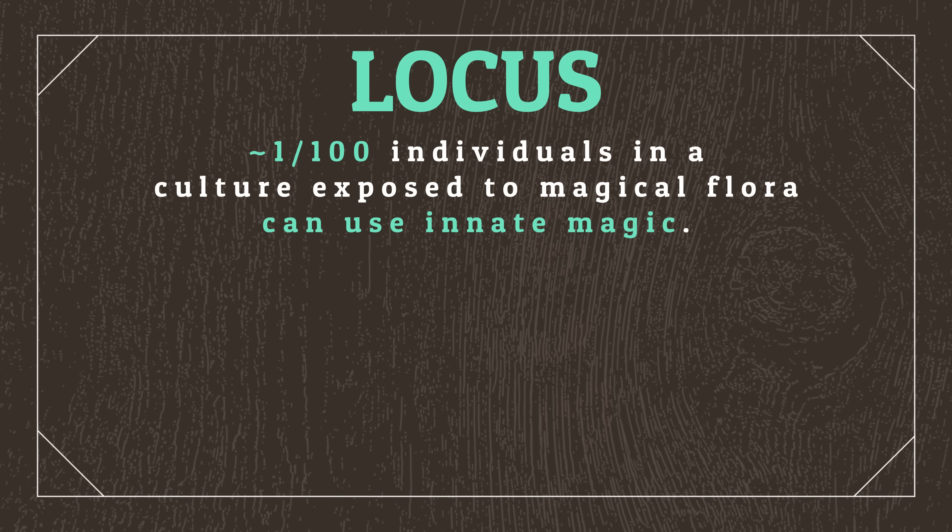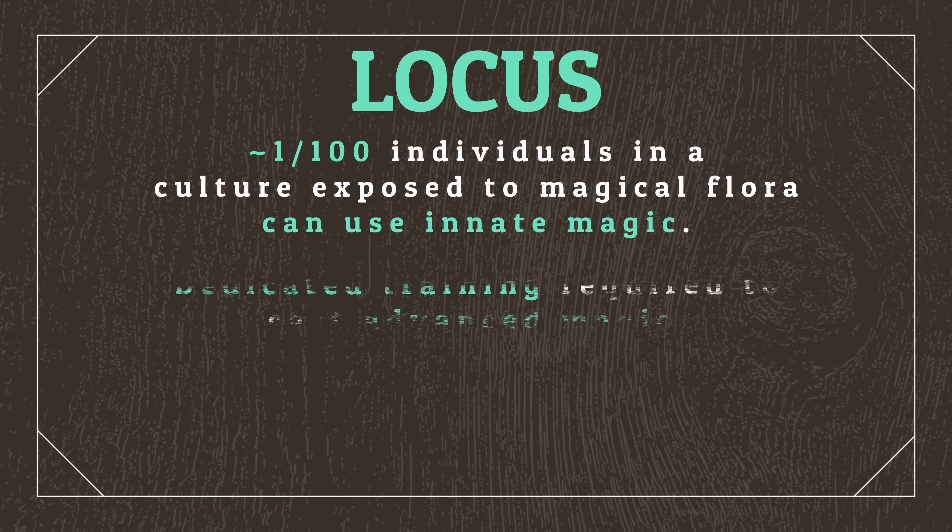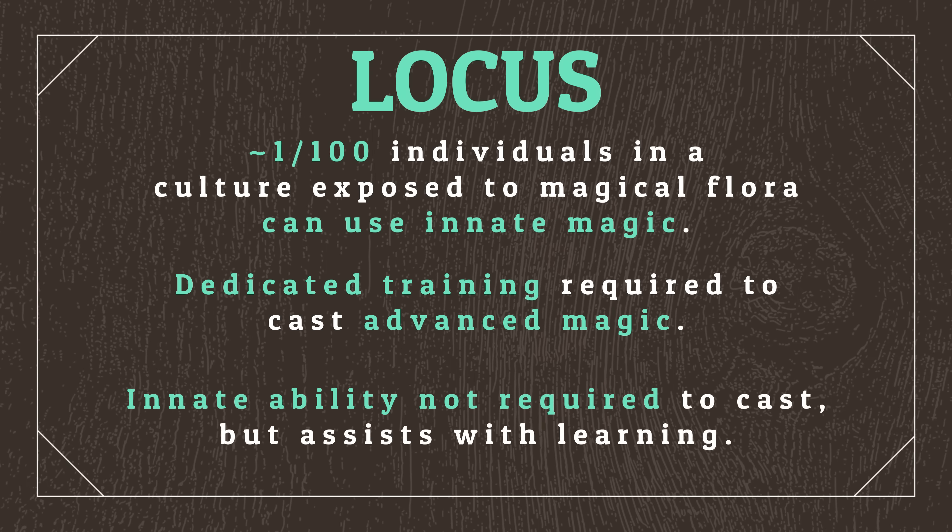Now we need to determine whether our world will be a low, middle, or high magic setting. Locus easily fits the mould for a low magic setting, as so far we've created everything through science rather than magic. With this in mind, we can come to a couple of expectations: firstly, that magical flora will be uncommon and special, and secondly, that magic users will be rare. While a culture may have innate magic users after being exposed to magical flora for many generations, the number of magic users is likely to be limited, require training, or perhaps both. I particularly like the idea of a greater number of people being able to use very basic magic, with advanced use requiring training. So let's say that roughly one out of a hundred individuals within a magic-exposed culture can use magic innately, but that to cast more than very basic invocations requires dedicated training. Innate magical ability won't be required to learn how to use magic, but it'd certainly help.